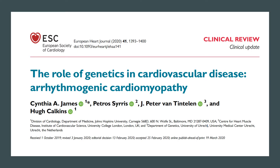This review describes current understanding of the genetic architecture of arrhythmogenic cardiomyopathy and its mechanisms of pathogenesis, an emerging threshold model for ACM inheritance in which multiple factors, including pathogenic variants in non-ACM genes, genetic modifiers, and environmental exposures, particularly exercise, are required to reach a threshold for disease expression.